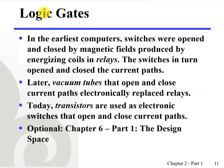Logic gates are electronic circuits that operate on one or more input signals to produce an output signal. Electrical signals such as voltages and currents exist throughout a digital system or microcontroller in either of two recognizable binary values. Voltage-operated circuits respond to two separate voltage ranges that represent a binary variable equal to logic 1 or logic 0. The input terminals of logic gates accept binary signals within an allowable range and respond at the output terminals with binary signals that fall within the specified range.